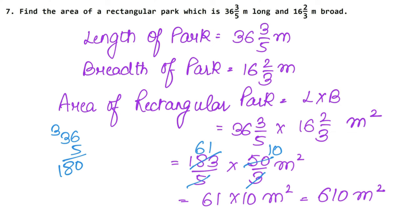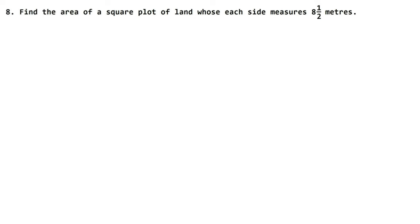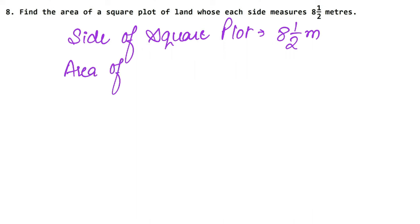Let's do the next question. Next question, we are saying, find the area of the square plot of land. Now we have to find the area of square plot of land whose each side measures, and the side of that square plot is 8 whole 1 upon 2 meters. So we will write side of square plot. That is 8 whole 1 upon 2 meters and we have to find the area of square plot.